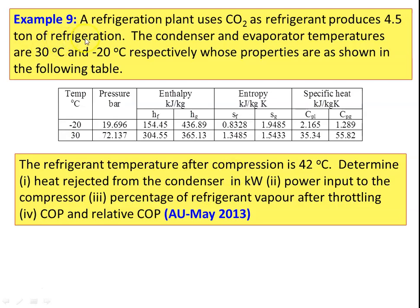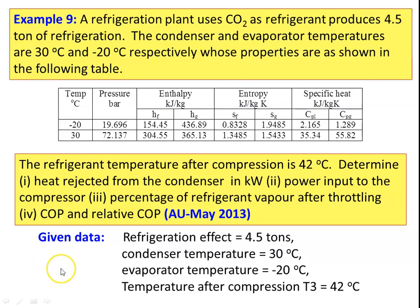We take Example 9. A refrigeration plant uses CO2 as the refrigerant and produces 4.5 tons of refrigeration. The condenser and evaporator temperatures are 30°C and minus 20°C respectively, whose properties are shown in the table. The refrigerant temperature after compression is 42°C. Determine: heat rejected from the condenser in kilowatts, power input to the compressor, percentage of refrigerant vapor after throttling, theoretical COP, and relative COP. This is from the Anna University exam, May 2013.